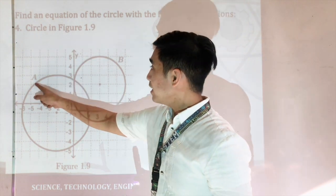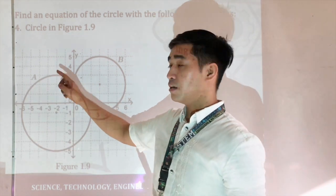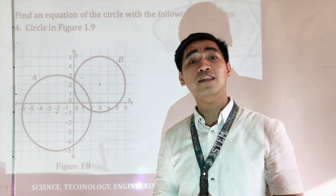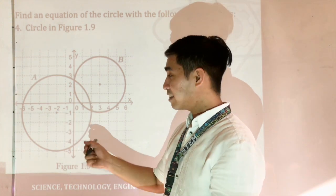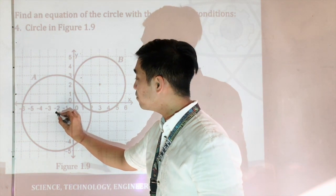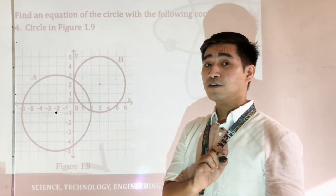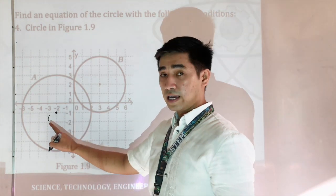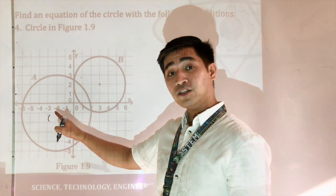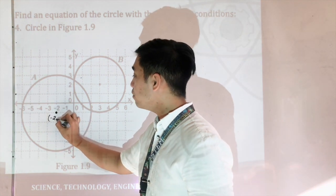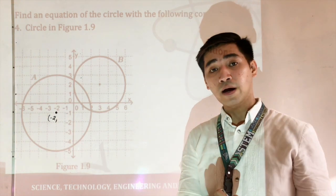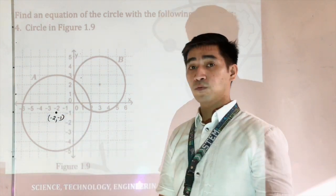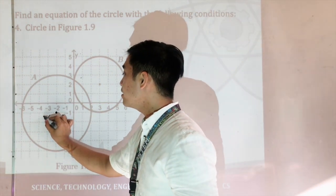This is circle A in figure 1.9. In circle A, all we have to do first is to identify the center. We are given the center of circle A in figure 1.9. The coordinate is HK — H is the X coordinate, which is negative 2, and K is the Y coordinate, which is negative 1. Therefore, we now have the center.